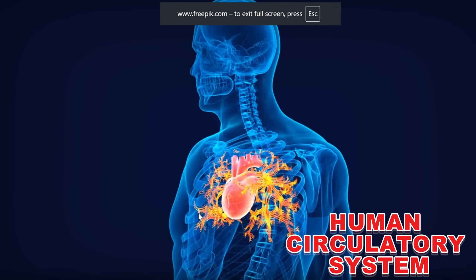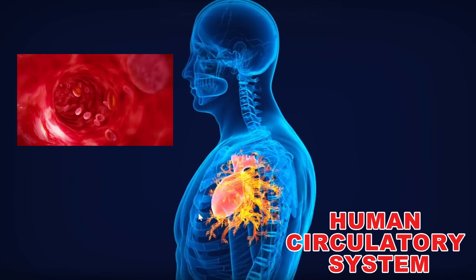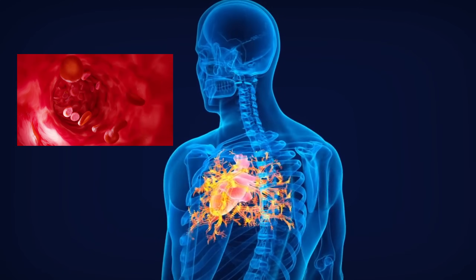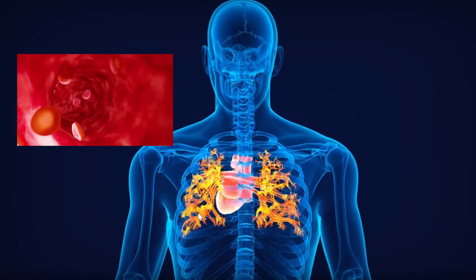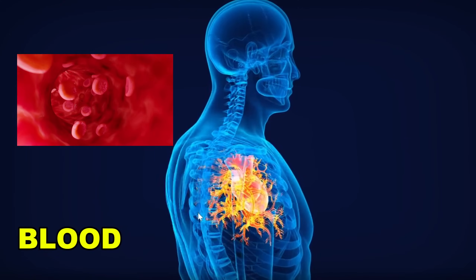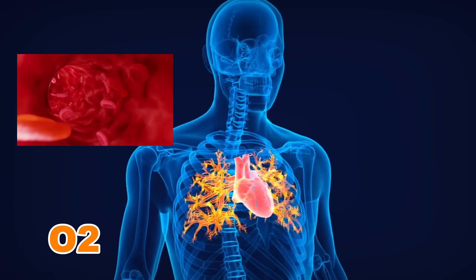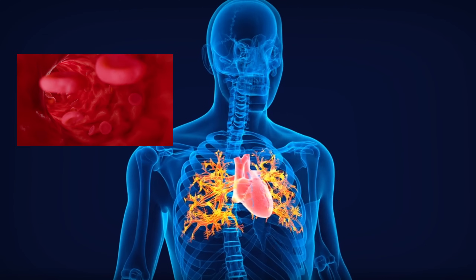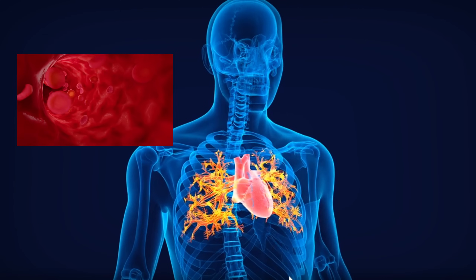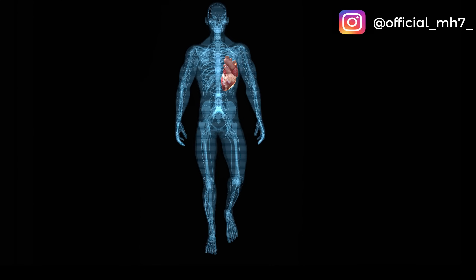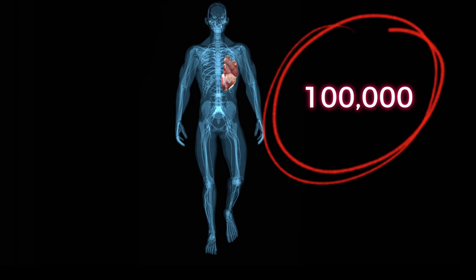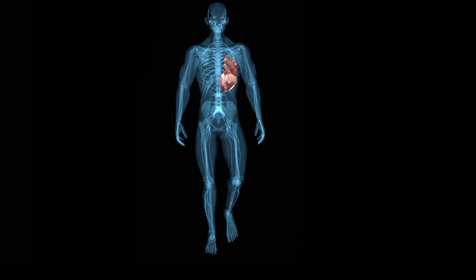The human circulatory system is a life-sustaining network, transporting blood, nutrients, oxygen, and waste products throughout the body. At its center is the heart, a tireless pump that beats over 100,000 times each day.